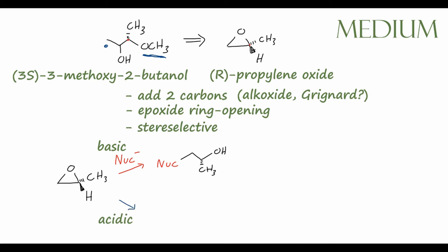What if we use acidic conditions instead? Then we'll be using something like H-NUC, where the nucleophile is bonded to a proton. In acidic conditions it's kind of the opposite — we have an SN1-like process where the nucleophile will attack the more substituted center, in this case the right-hand carbon, and we still retain the stereochemistry of the methyl group. Comparing the products of basic and acidic ring openings to our target, the acidic product — with the nucleophile on the right-hand carbon — is actually closer to the product we want.